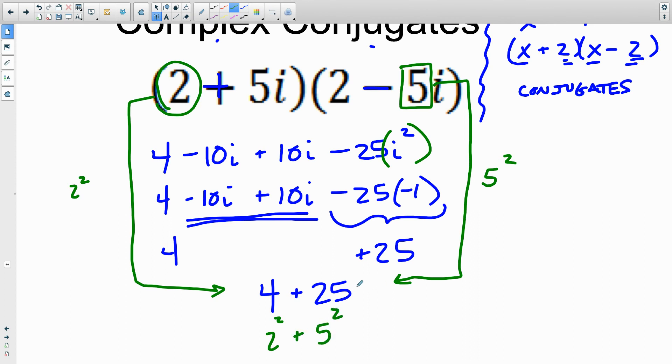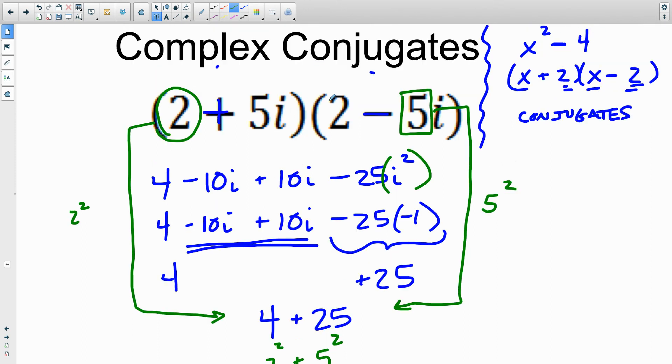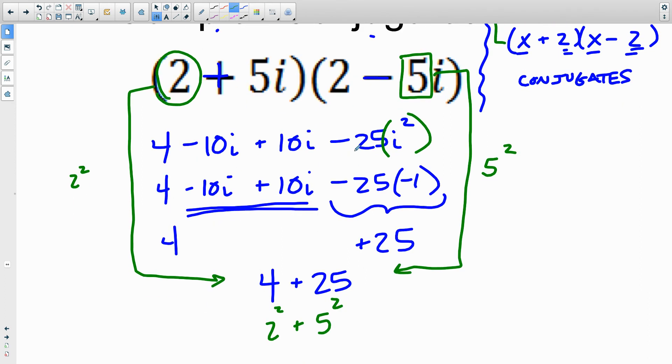So what's the connection between our real number conjugates and our complex conjugates? We said real number conjugates can produce the difference of squares. Complex conjugates produces the sum of squares.